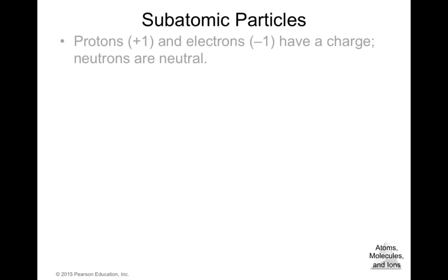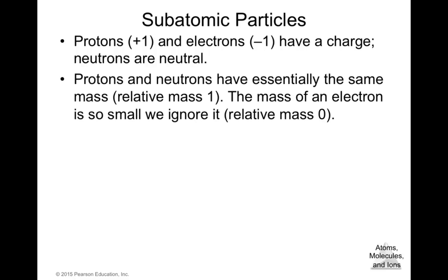The three most important subatomic particles are protons, electrons, and neutrons. Protons have a charge of +1, electrons have a charge of −1, and neutrons are neutral. Protons and neutrons have essentially the same relative mass of 1, while the mass of an electron is so small it is effectively considered zero compared to protons and neutrons.